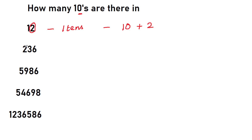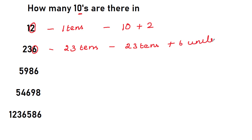Same way, see the next question: 236. How many tens are there in 236? You are just going to leave the last digit and tell the rest — that is 23 tens. Actually, what is happening here? It is 23 tens and the leftover is 6 units. 23 tens plus 6 units makes 236. Same way, you just leave the last digit — that is 6 alone — and write 598 tens. It means 598 tens plus 6.